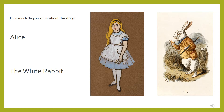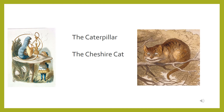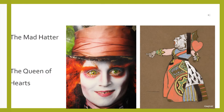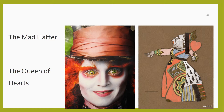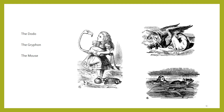How much do you already know about the story? You certainly know Alice and the White Rabbit, the caterpillar and the Cheshire Cat, the Mad Hatter and the Queen of Hearts, the Dodo, the Griffon and the Mouse.